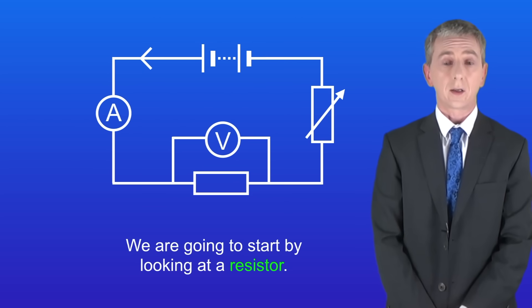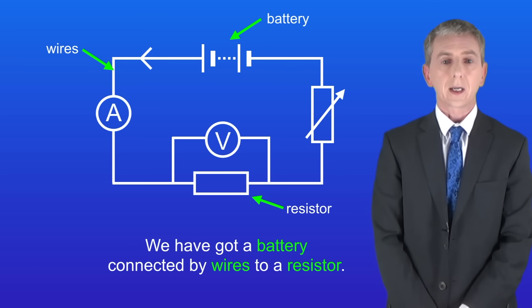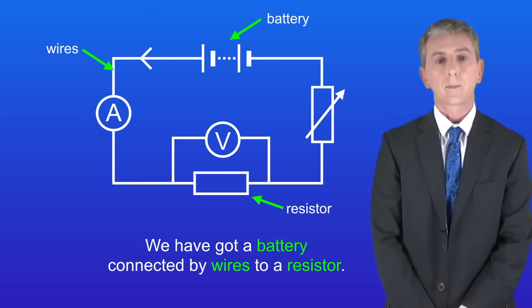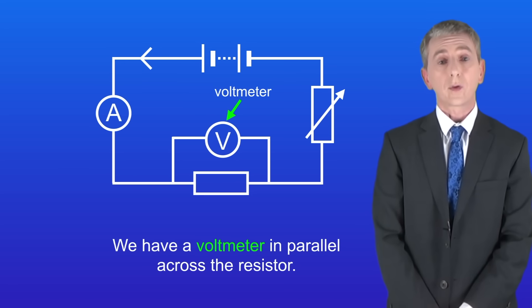We're going to start by looking at a resistor and to do that we need to use this circuit. We've got a battery connected by wires to a resistor. The resistor is in series with an ammeter and a variable resistor, and finally we've got a voltmeter in parallel across the resistor.